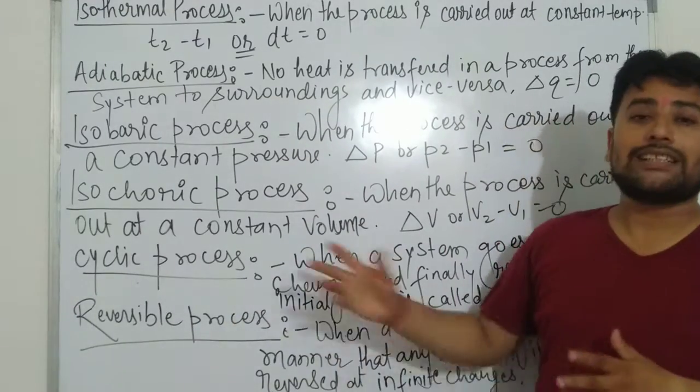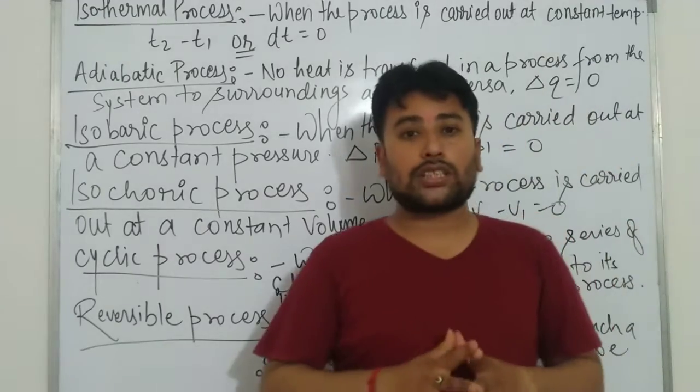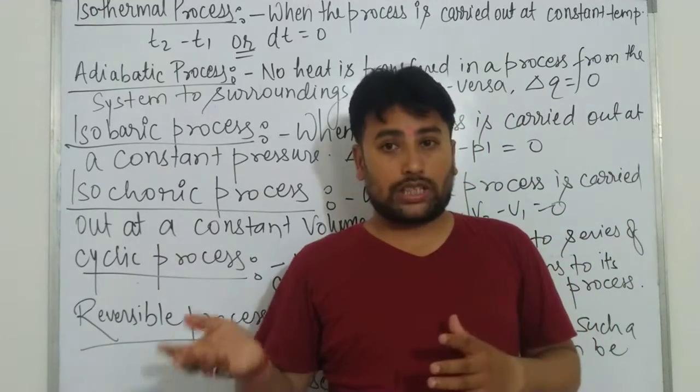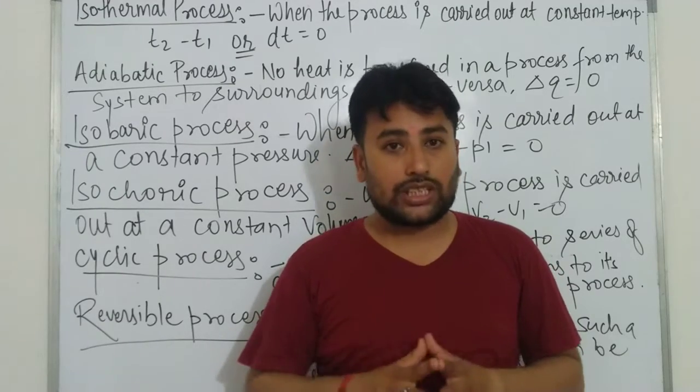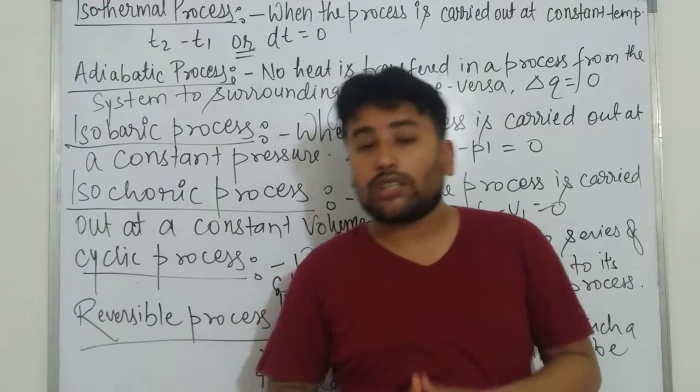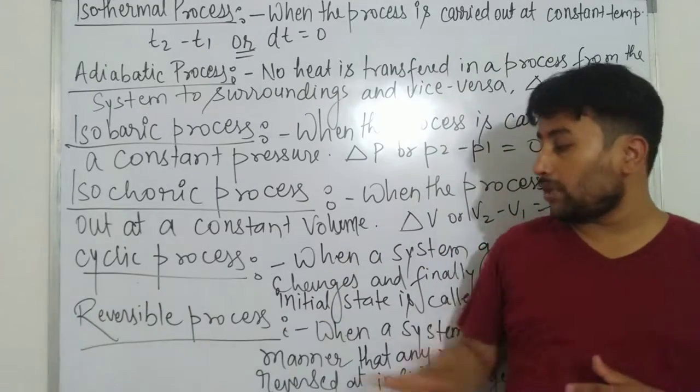Cyclic process is a process in which many changes occur. It undergoes finite changes but finally it returns to its initial state. That type of process is called cyclic process.